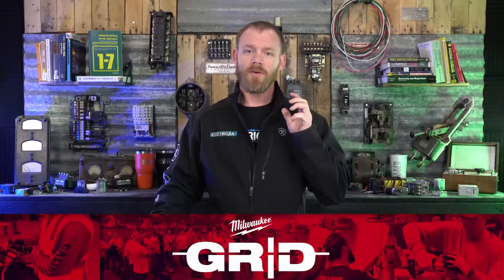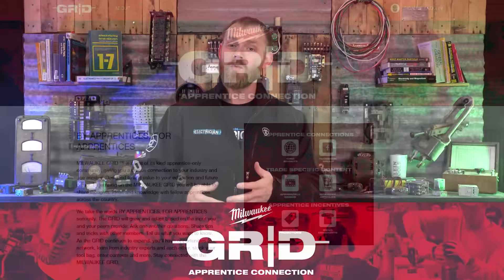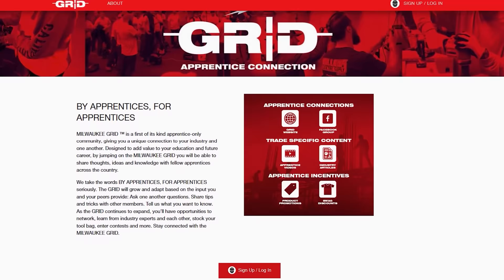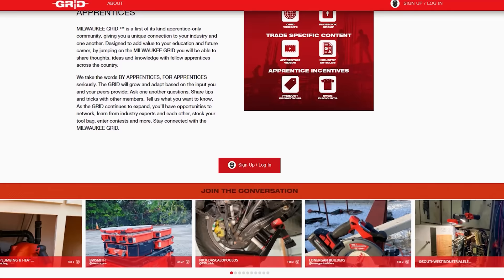apprentice support program. Once you get into an electrical apprenticeship, Milwaukee Grid is a program you can go to their website, sign up for, and once you log in there's a whole bunch of different resources for multiple different trades. There's videos, things about tools, all kinds of really cool stuff in there. If you're interested and you're a brand new apprentice and you want to learn a little bit more about your craft and have some resources, there's a link in the description below.